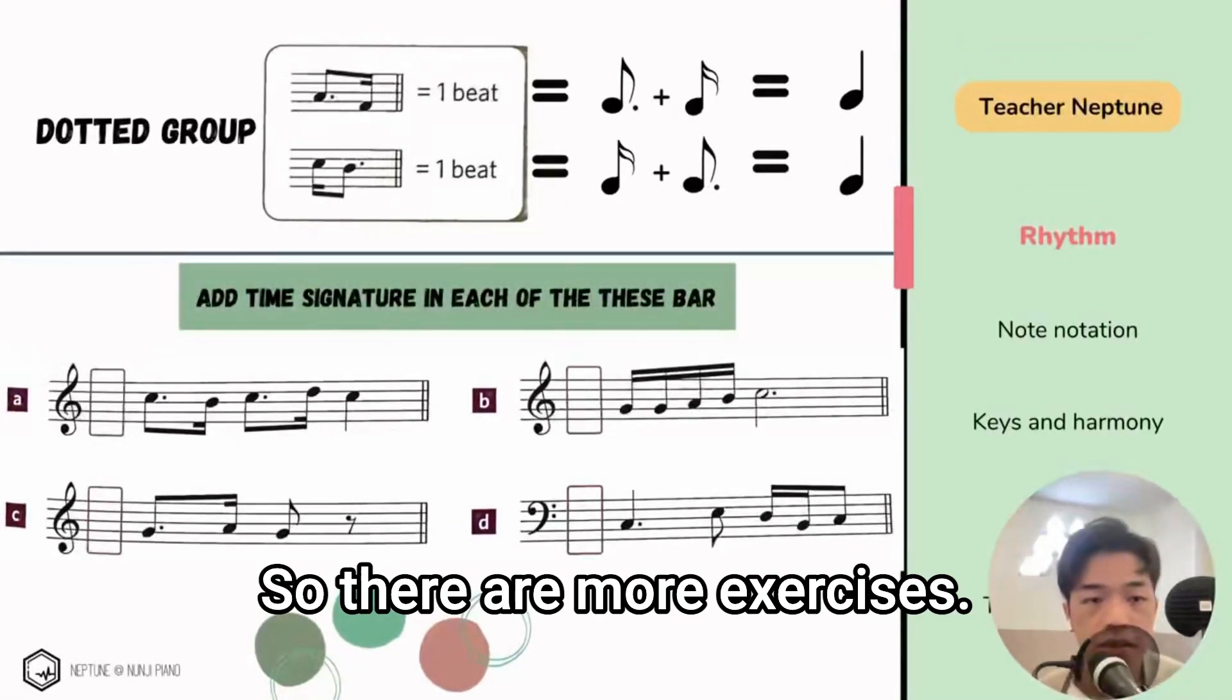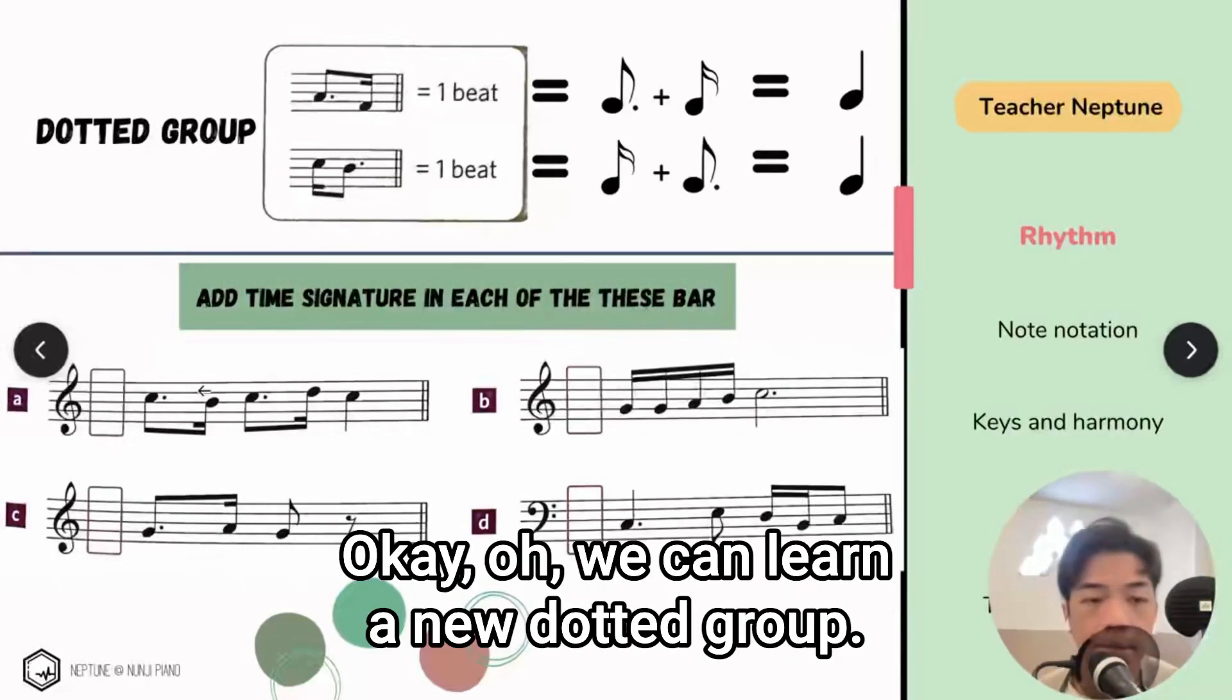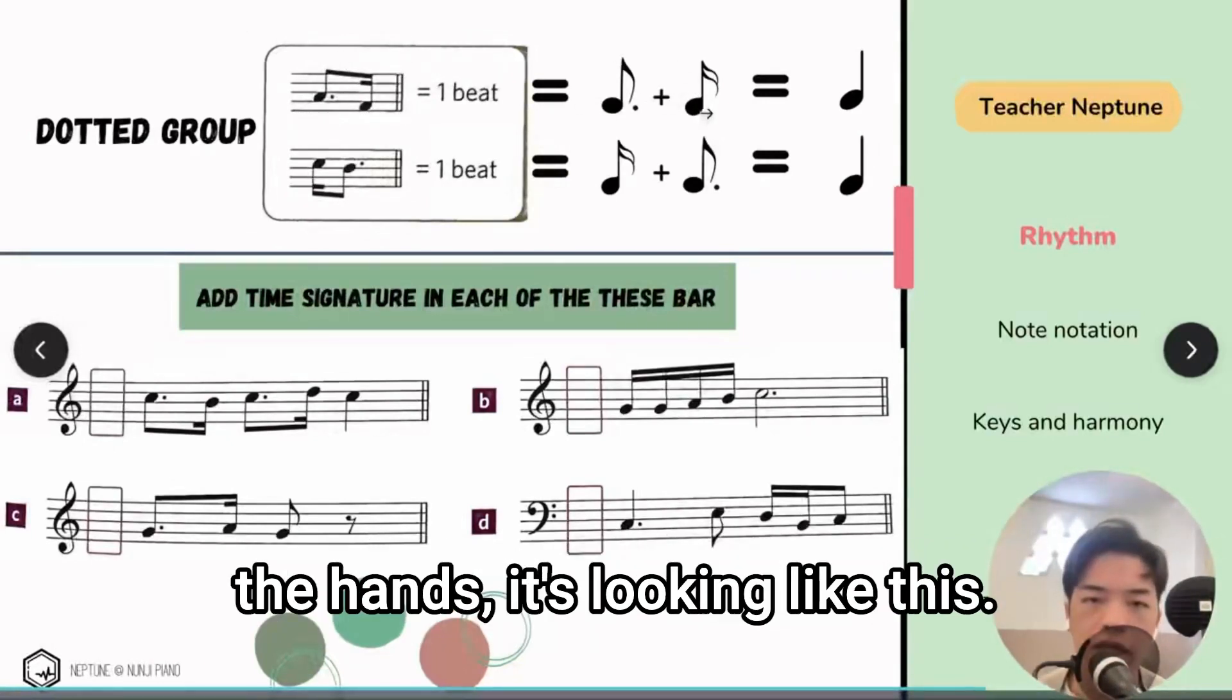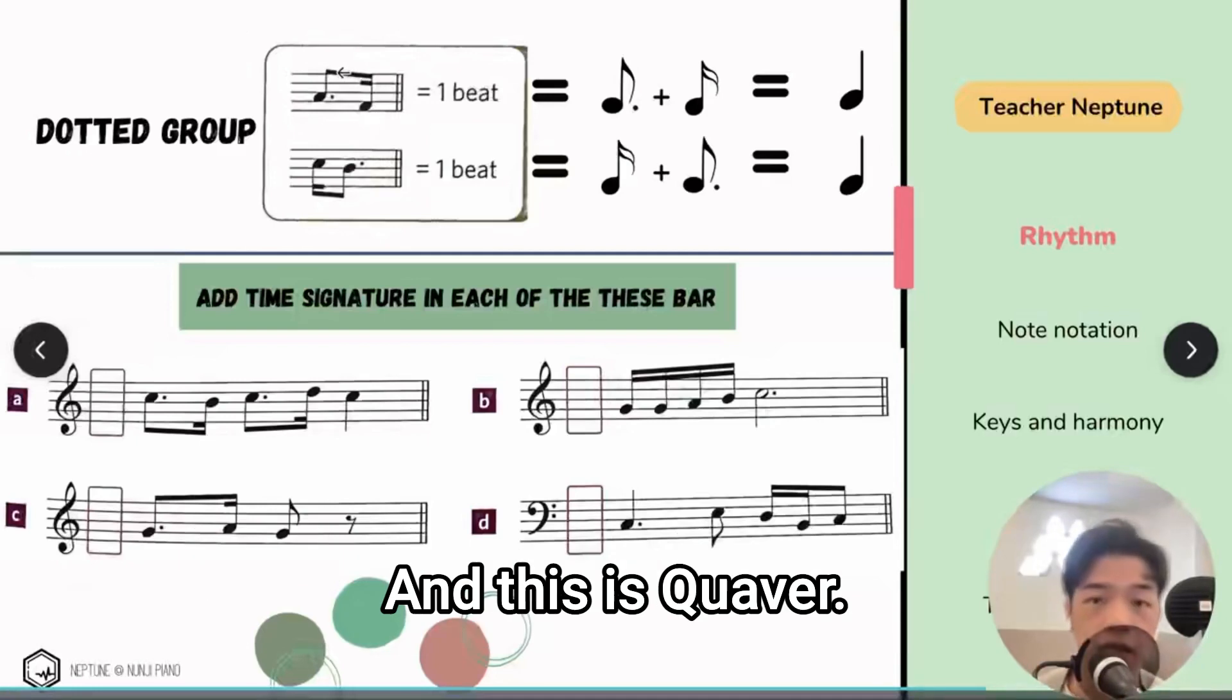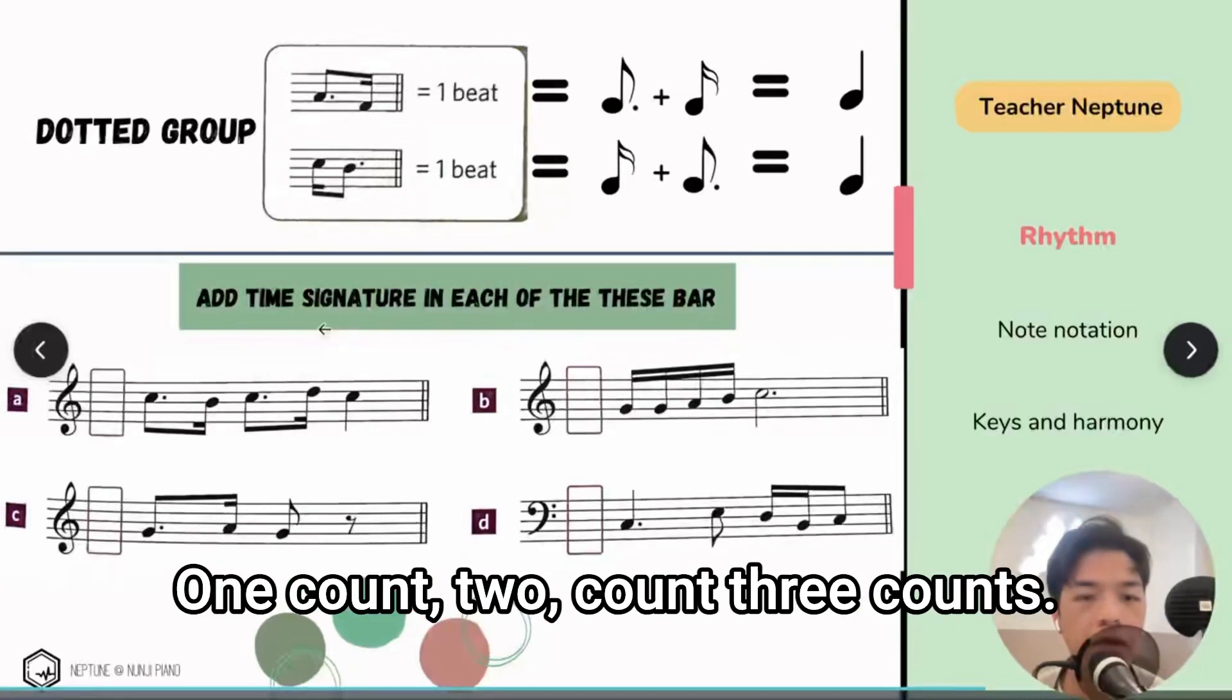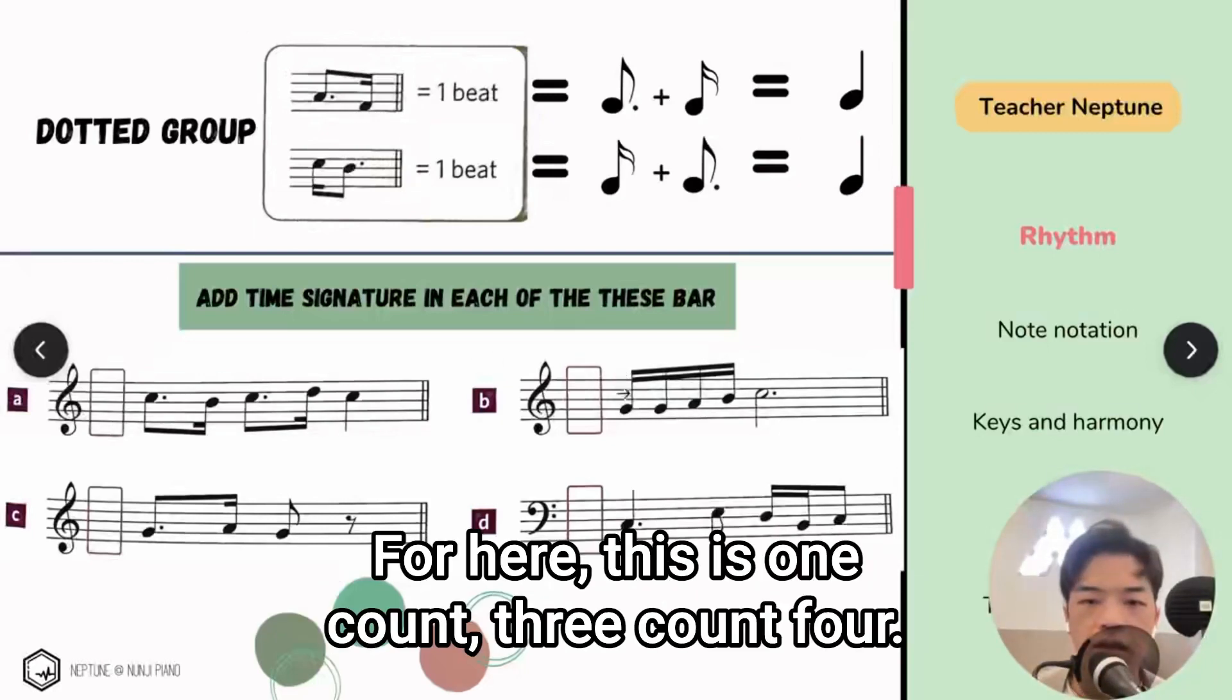So there are more exercises. Add time signature in each of these bars. Let's do it together. We can learn a new dot group, this is a dot rhythm group which is one count. If we separate the hands, it's looking like this. When they're holding their hands, there are two hands which is semi-quavers, and this is a quaver. So you can see this is one count, one count, two count, three counts. So we put three in here and you put a four below it because this is the value.